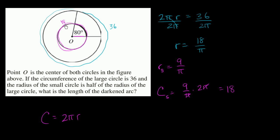But that's not what they're asking. They're asking for the arc length of this darkened part, which is 80 degrees. To go all the way around the circle is 360 degrees, so this arc is 80/360ths of the entire circumference. To find the arc length, multiply the circumference by 80 over 360.